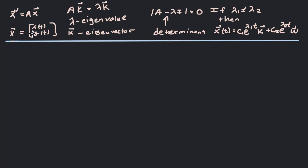The first function x of t and the second function y of t are both dependent variables on the variable t. We set up the solution starting out with x equals e to the lambda t, and then that turns into an eigenvalue problem: A times k vector equals lambda times k vector, where A is a matrix and lambda is a scalar. Lambda is called an eigenvalue of matrix A, and k is called an eigenvector. Eigen is a German word meaning 'same,' so multiplying by this matrix is the same as just multiplying by this scalar for this eigenvector.